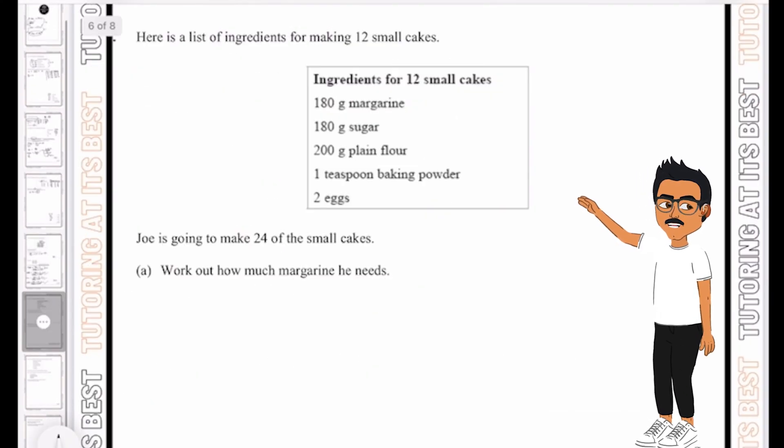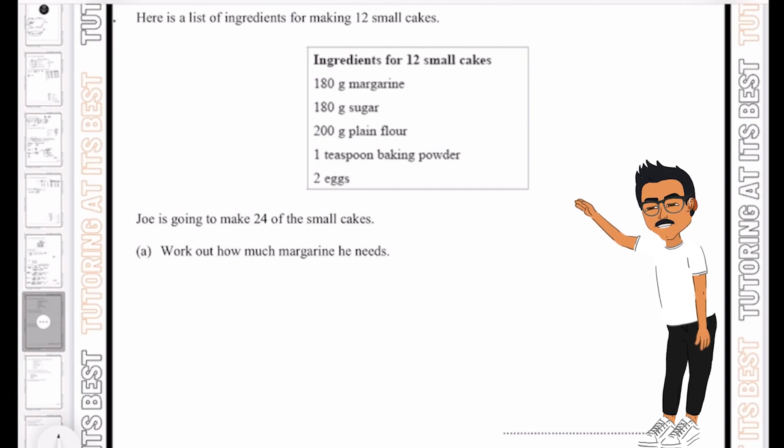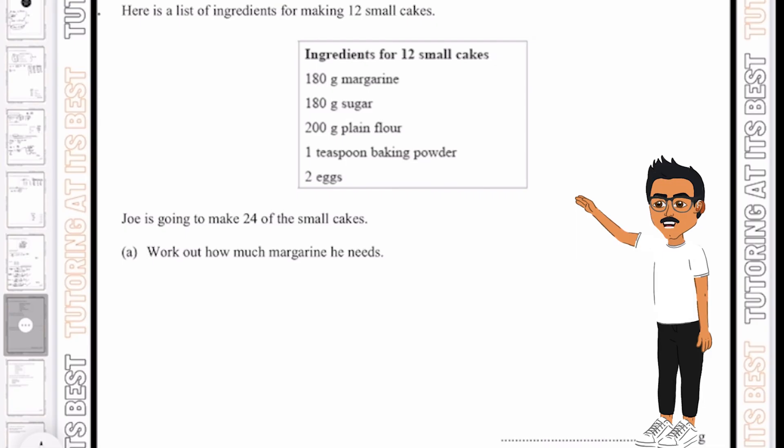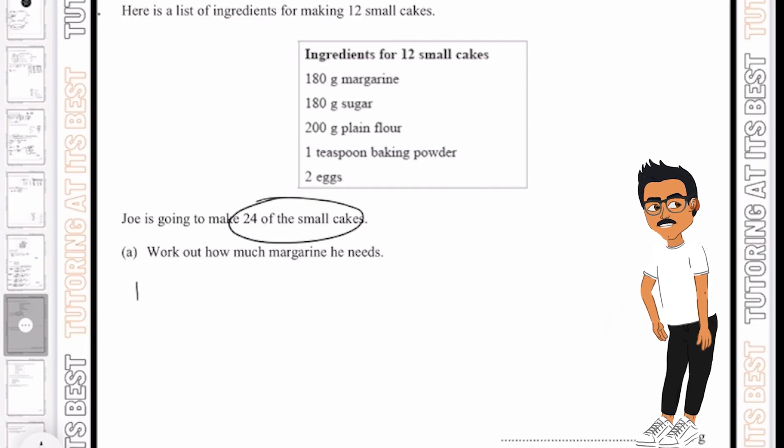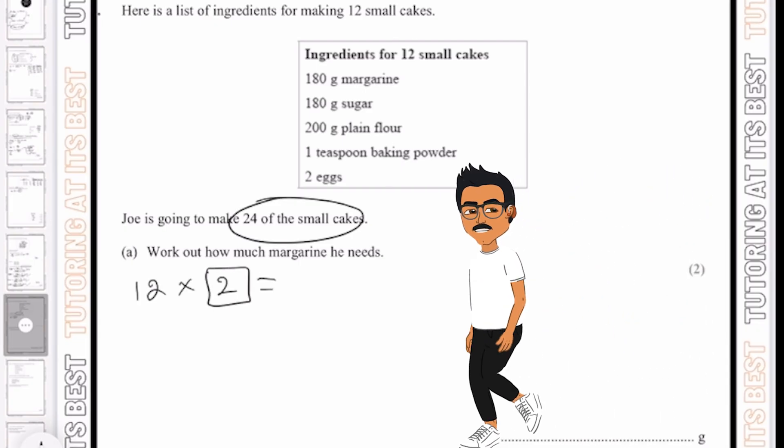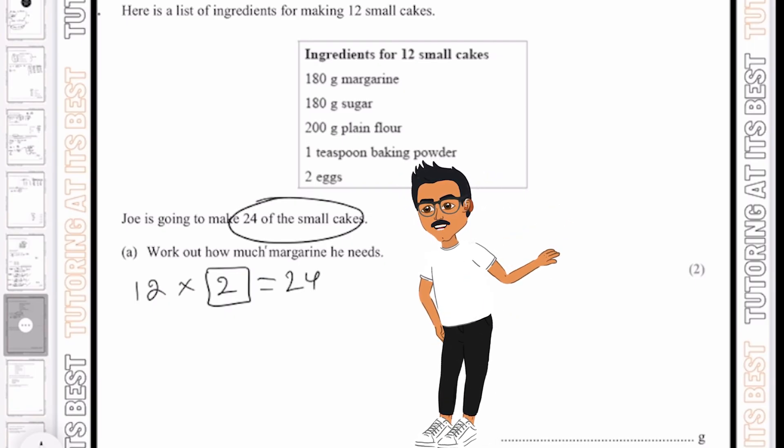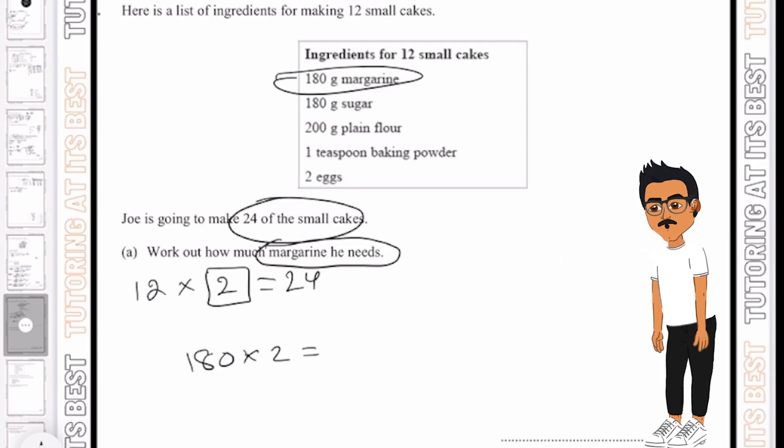Perfect. Let's now move over into our next question. Don't forget to pause the video at any stage. We're doing really well, so let's keep up the great work. So here is a list of ingredients for 12 small cakes. And we now need to make 24 of these small cakes. So as you know, the multiplier will be 12 times 2, which gives us 24. So all we need to do is multiply our margarine by 2. So if it's 180 grams right now, we'll have 180 times by 2, which is 360. And that is our answer.